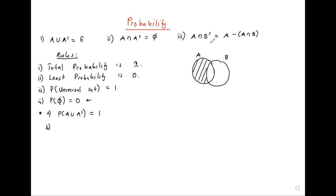So the reason why we say the probability of A union A complement is one is because you've brought everything that you want to study — you already have everything with you, put in the universal. All chances expected are together. What is the probability that you're going to have that thing? It's the whole universal, so it's one — total probability. That's why the probability of A union A complement is one, because A union A complement gives us the whole universal.